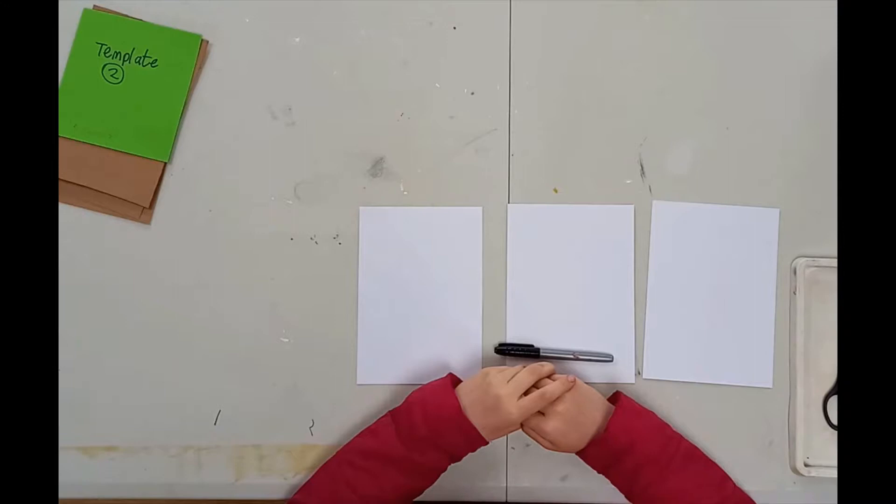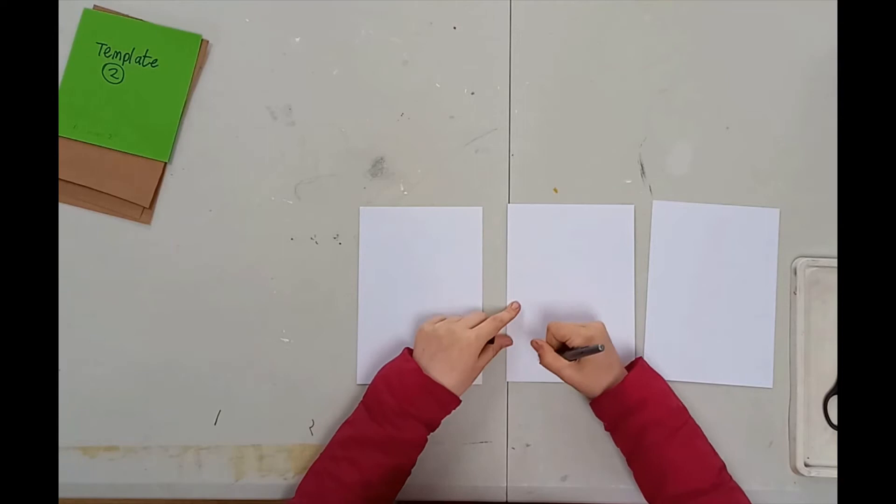Rosa is going to think about a story or an event and illustrate it on the three cardboard panels. First she's going to do three preliminary drawings.